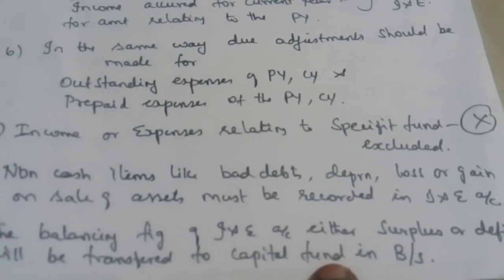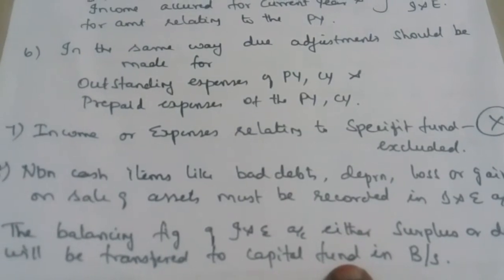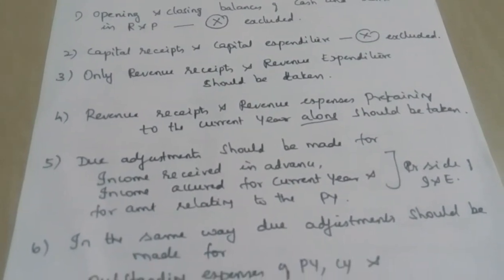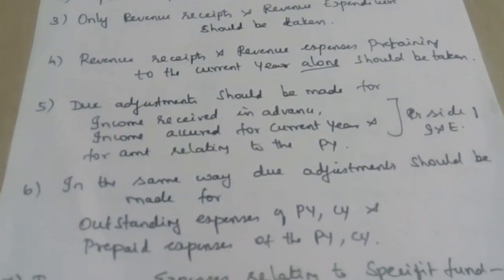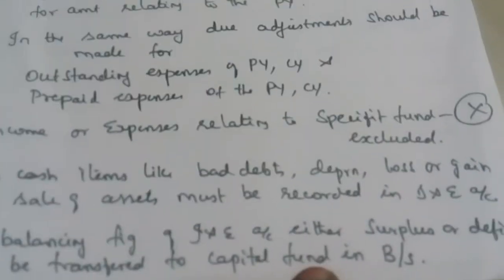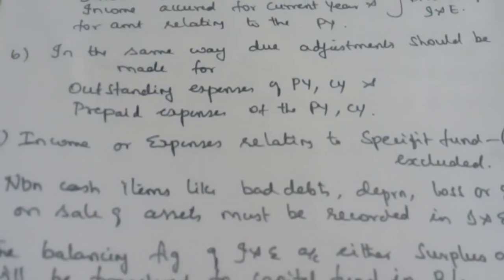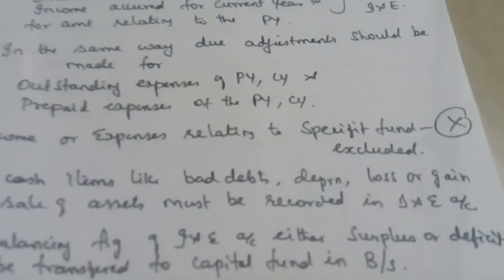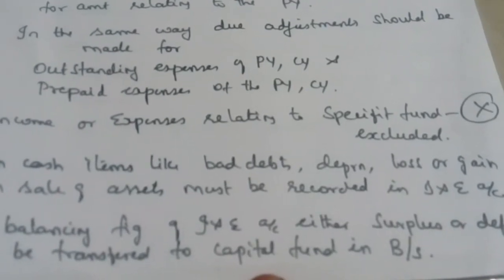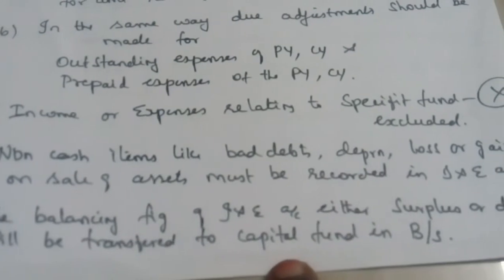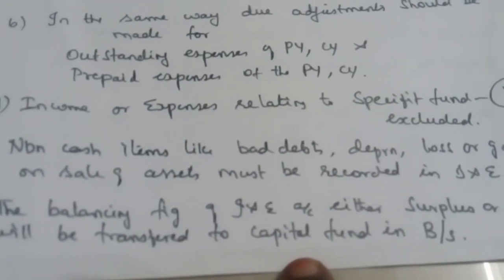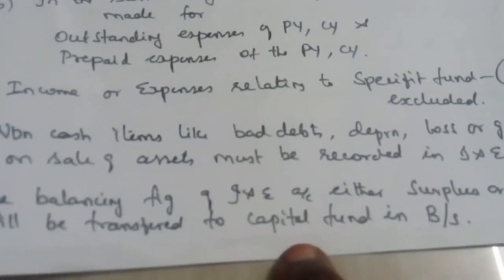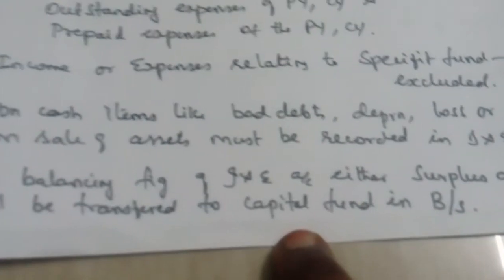So, from the beginning, we have seen three items that should be excluded while preparing the income and expenditure. First, we should exclude the opening and closing balance of cash and bank; capital receipts and capital expenditure should be excluded; and income and expenses relating to specific funds should be excluded. Non-cash items like bad debts, depreciation, and loss or gain on sale of assets must be recorded in the income and expenditure account, even though they are not recorded in the receipts and payment account. The balancing figure — surplus or deficit — should be transferred to the capital fund and recorded in the balance sheet.